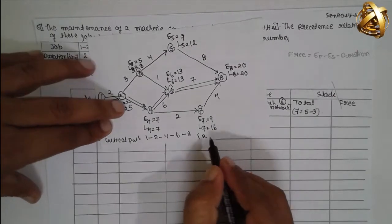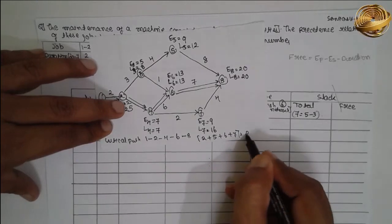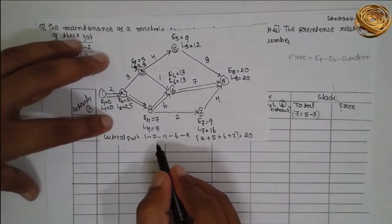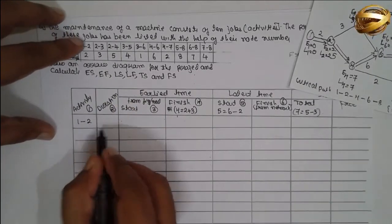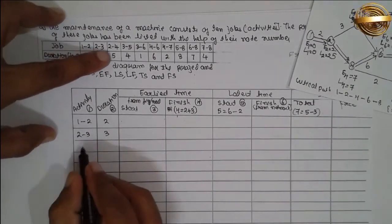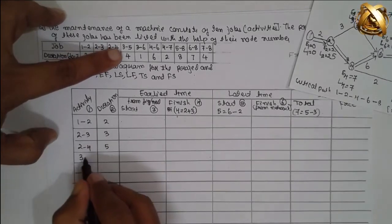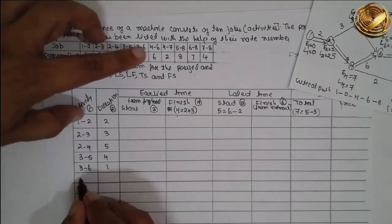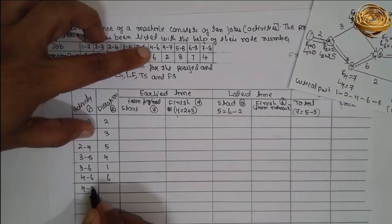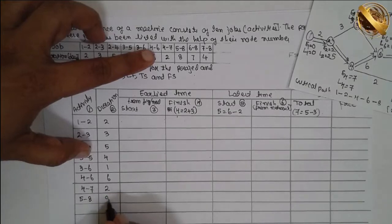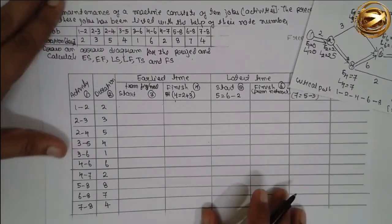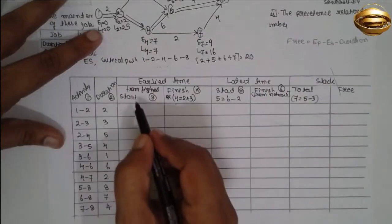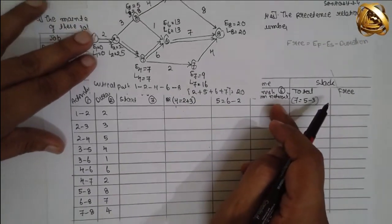Now I will go to the table. First I will write the activities — activities are the jobs: 1-2, 2-2 (i.e., 2-3), 2-4, 3-5, 3-6, 4-6, 4-7, 5-8, 6-8, 7-8. Durations are 2, 3, 5, 4, 1, 6, 2, 8, 7, 4 respectively. We have to write the earliest start time and latest finish time from the network diagram.